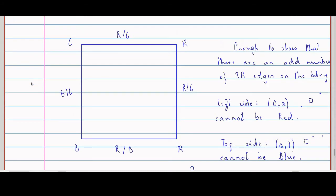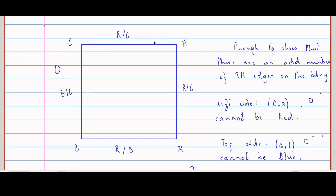Is it clear? So on the left side, how many red-blue edges can there be? Zero — there is no red point. So there are zero on this side. On the top, again there is no blue, so again I have zero red-blue edges.